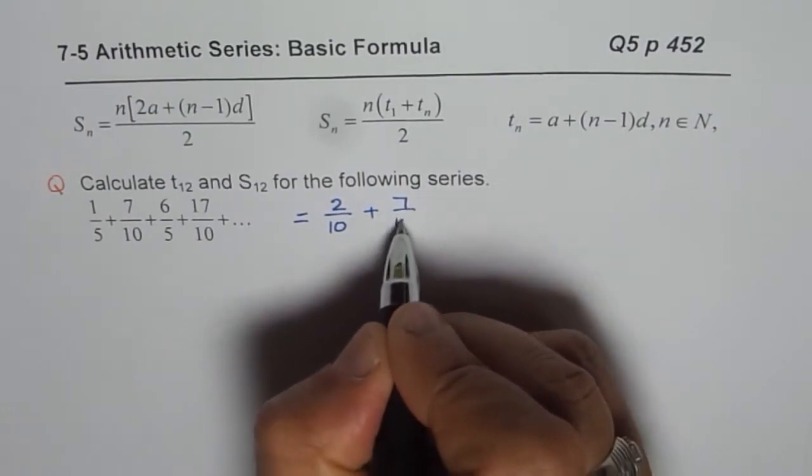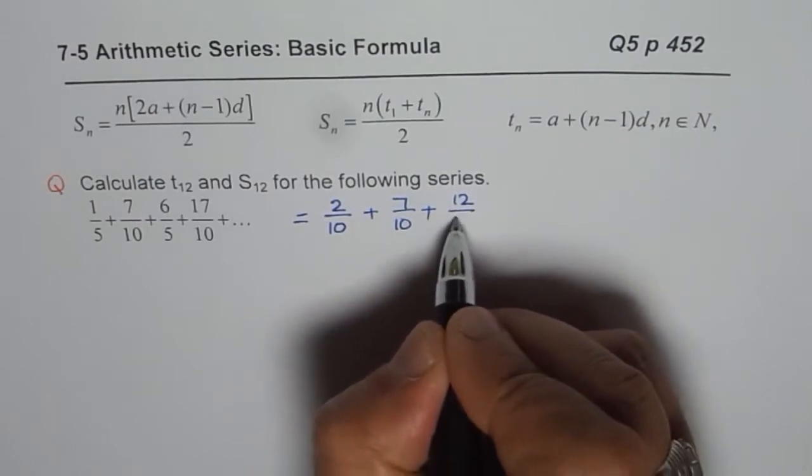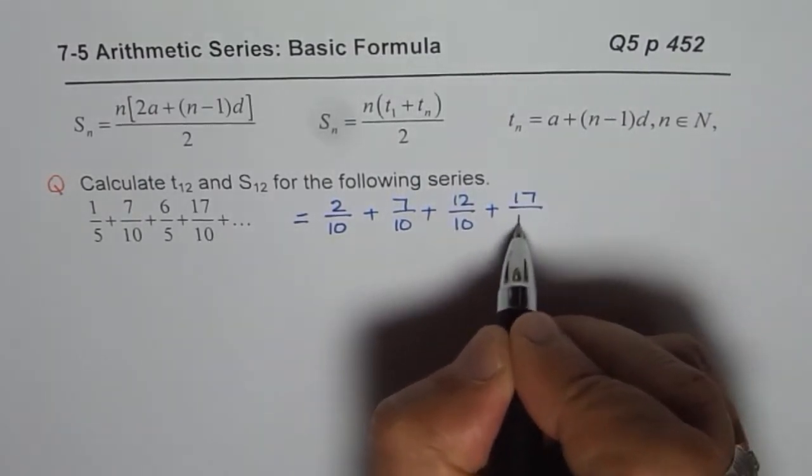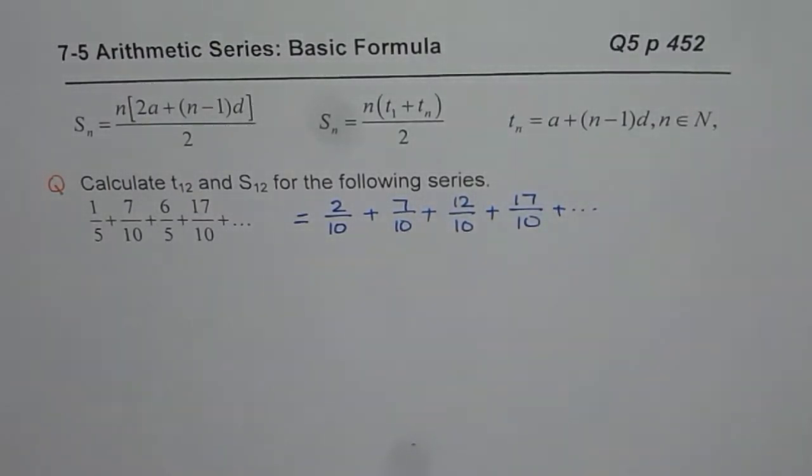Then we have 7 over 10, and this time I have to multiply by 2 to get 12 over 10 instead of 6 over 5. Then we have 17 over 10 and so on. Now it is much easier to understand what sequence we are talking about.